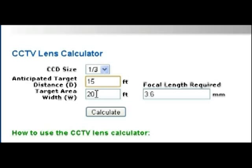You could also experiment with, like I said, using different target area widths going the other way. Let's say we wanted to make it a little bit narrower if we put in 15 feet. That says we need a 4.8 millimeter lens. Keep in mind, as we make the target area width narrower, the magnification is going to be greater. So that's what's requiring a longer focal length. As the focal length increases, the magnification increases.